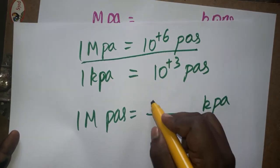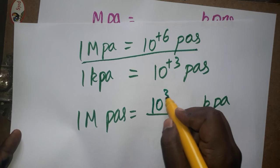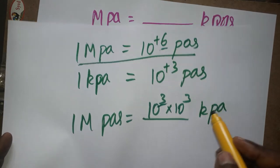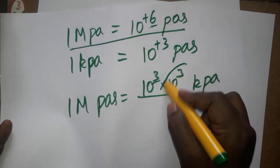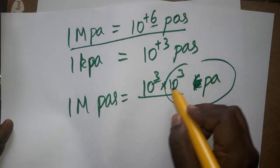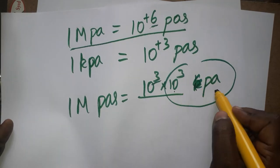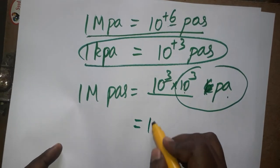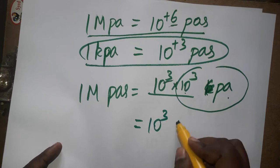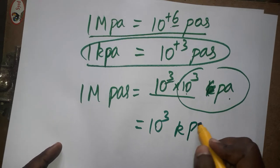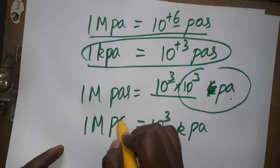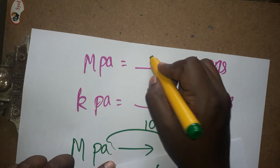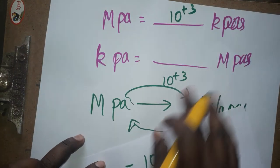1 megapascal is 10 to the power of 6 pascals. We can write that as 10³ × 10³, so the exponent 6 is written as 3 plus 3. That means 10³ pascals equals 1 kilopascal, so 1 megapascal equals 10³ kilopascals.